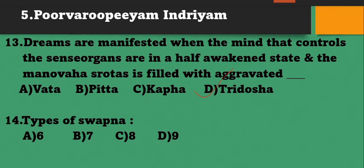Types of Svapna: Options 6, 7, 8, or 9. The types of Svapna mentioned in Purvarubhiyam Indriyam are 7. Option B. They are: Drishtam, Shrutam, Anubhutam, Prarthitam, Kalpitam, Bhavigam, and Doshajam. Seven types of Svapna are mentioned in this chapter.